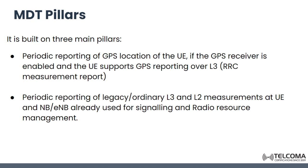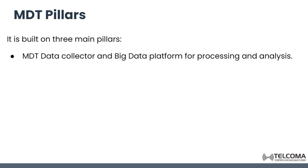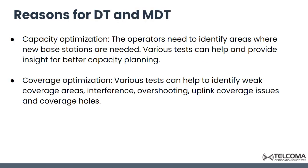The second pillar is the periodic reporting of legacy or ordinary layer 3 and layer 2 measurements at the UE and Node B or E-NodeB, which is already used for signaling and radio resource management. The third pillar is an MDT data collector and big data platform for the processing and analysis of this data.